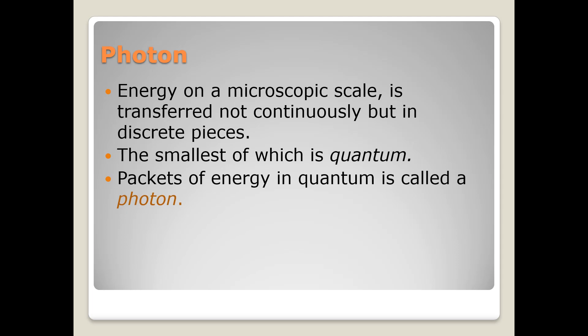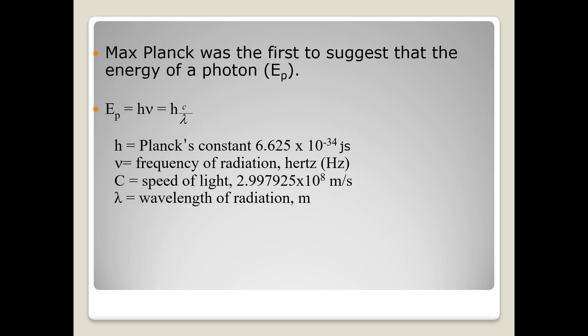Max Planck was the first person to suggest that the energy of a photon is given as E_p = hν, where ν can be written as c/λ.